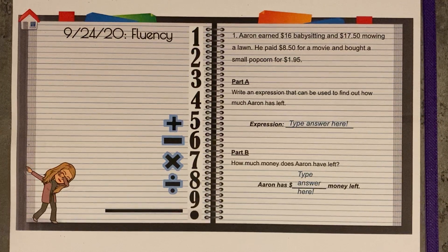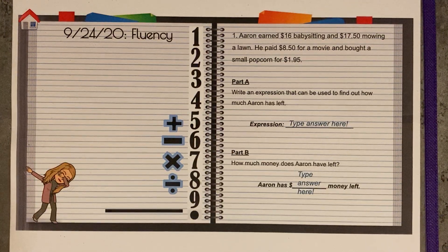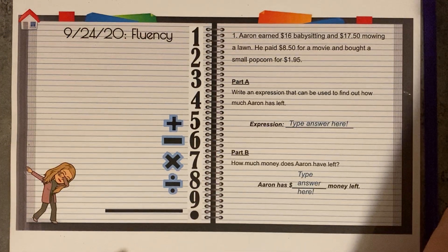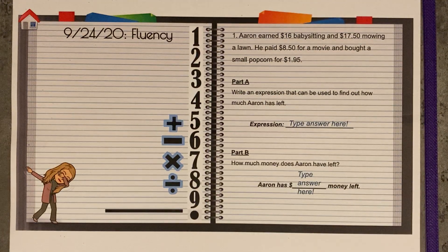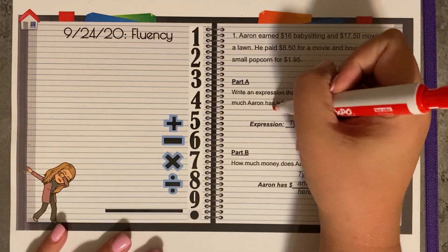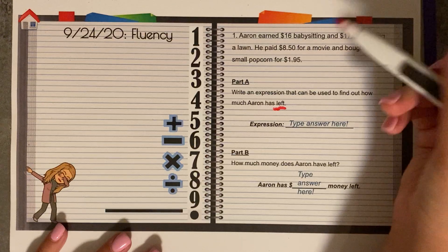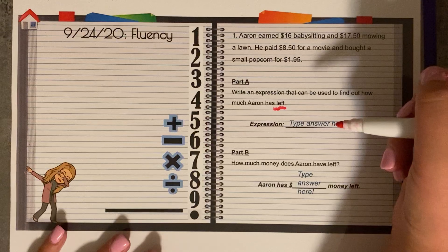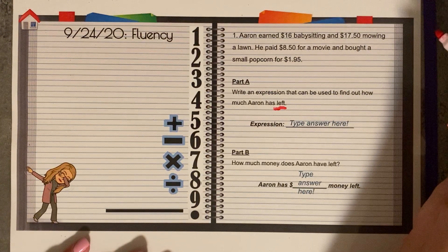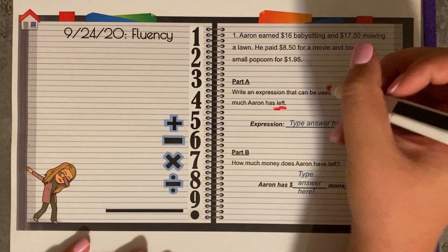Part A: write an expression that can be used to find how much Aaron has left. So what we can do is figure out how much he has left. First of all, we need to add together what he earns, because we need to subtract what he has left. So $16 babysitting and $17.50 mowing a lawn — there's more than one answer here.